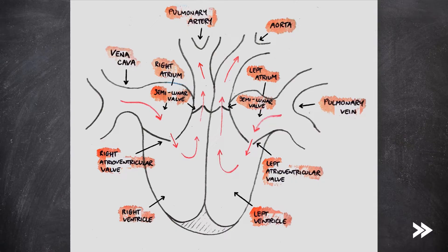Looking at the left half of the diagram, which portrays the right side of the human heart: we have the vena cava, which brings deoxygenated blood from the body to the heart. Blood enters the heart at the right atrium, which is connected to the right ventricle via the right atrioventricular valve. The right semilunar valve then allows blood to flow from the right ventricle into the pulmonary artery, which carries deoxygenated blood from the heart to the lungs.